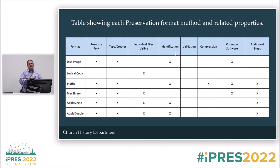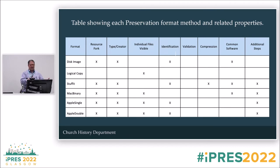StuffIt by default compresses the file, but that is a toggle you can do inside the software, so you can leave it uncompressed. StuffIt Expander is fairly common throughout the classic environment and modern systems, so they're fairly easy to utilize.